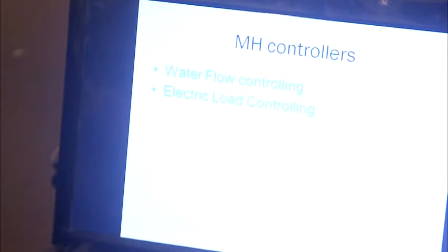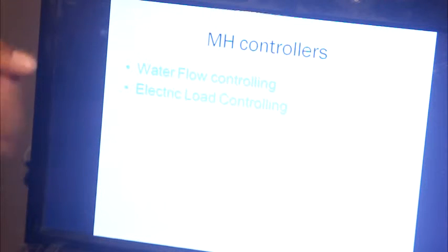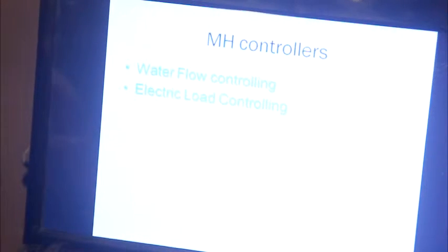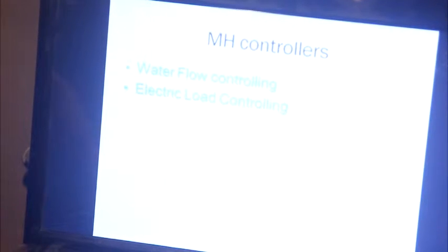Basically, there are two controlling technologies used in hydropower: number one, water flow controlling, and number two, electric load controlling. Water flow controlling is generally used in large hydropower. For micro hydropower and pico hydro, the most economical and most popular type of controller is the electric load controller. So here we will focus only on the electric load controller.